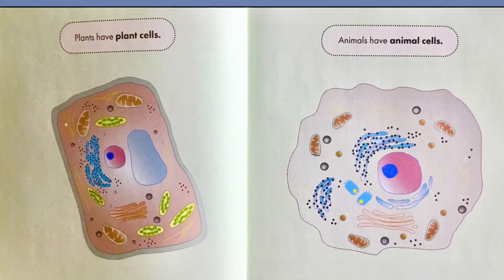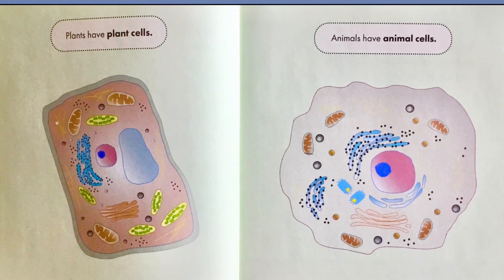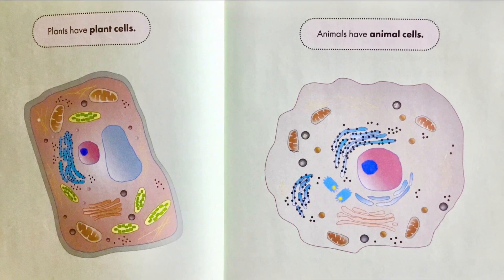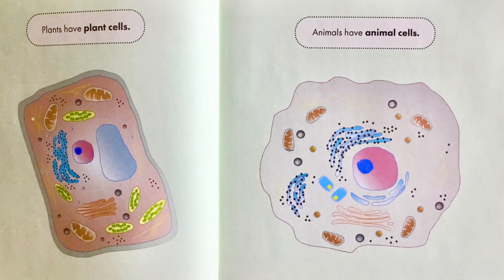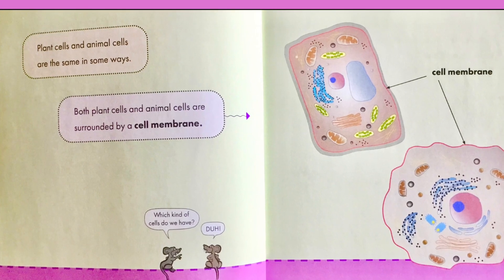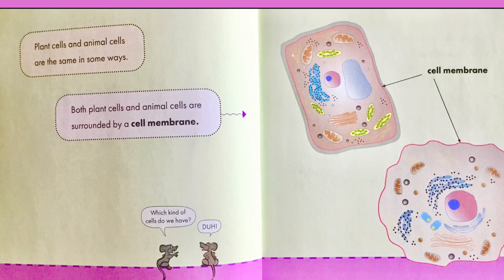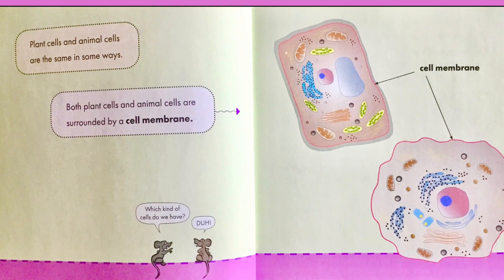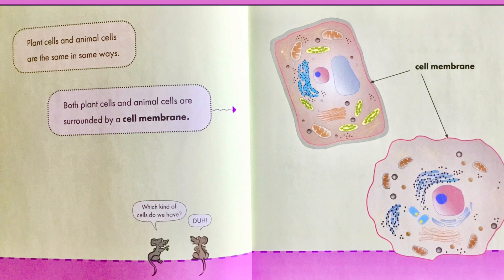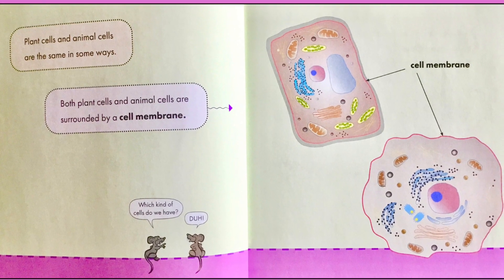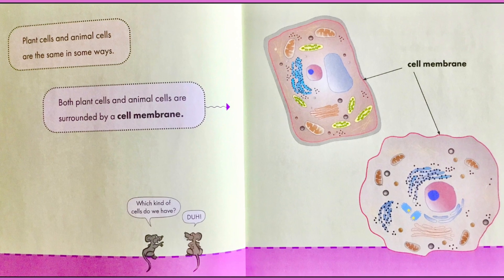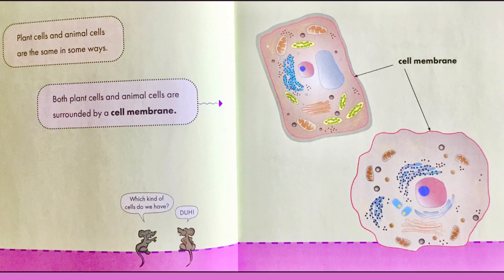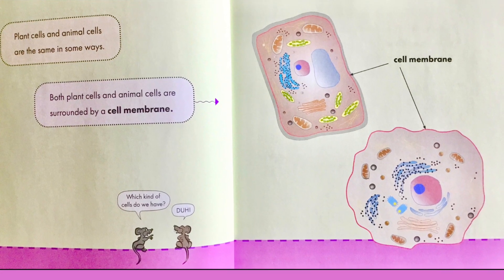Plants have plant cells, which have a rectangular shape. Animals have animal cells, which are a more circular shape. Plant cells and animal cells are the same in some ways — both are surrounded by a cell membrane. We have the circular animal cells, but both types have cell membranes.